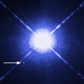A white dwarf, also called a degenerate dwarf, is a stellar core remnant composed mostly of electron degenerate matter. A white dwarf is very dense; its mass is comparable to that of the Sun, while its volume is comparable to that of Earth.